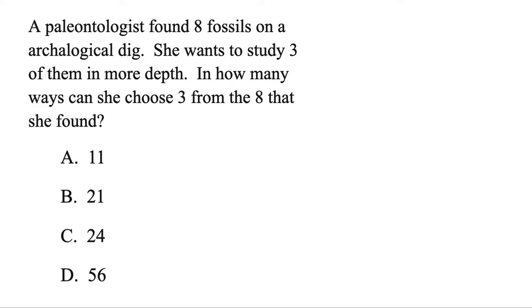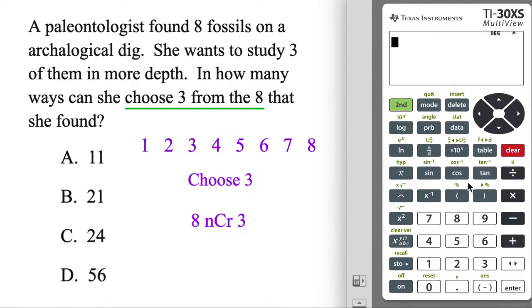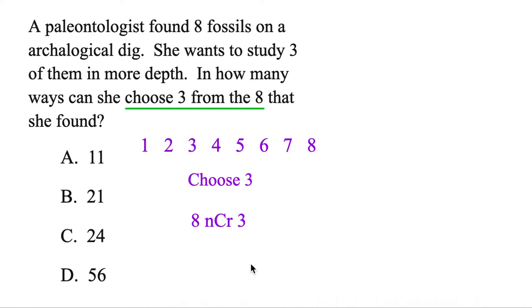A paleontologist found eight fossils in the dig. She wants to study three of them more in depth. In how many ways can she choose three from the eight that she found? So she has eight fossils, but she wants to choose just three of them. You could actually plug this into the calculator, and this is what you'll type in. You're going to start with eight things, and then this button is going to choose three of them. So let's see that. Okay, eight. And then this is the probability button. Just go down to the second one there. And then three. And fifty-six. So there's fifty-six ways to just choose three of those.